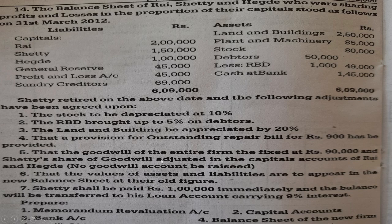Shetty's share of goodwill is to be adjusted in the capital accounts of Rai and Egde. No goodwill account to be raised — only goodwill calculation and gain ratio segregation. The values of assets and liabilities are to appear in the new balance sheet at their old figures, so we will prepare a memorandum revaluation account. Shetty shall be paid Rs. 1,00,000 immediately.